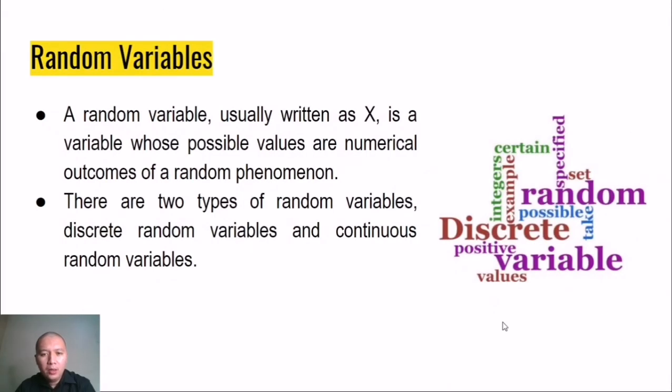When we talk of discrete and continuous variables, both of those are under the category random. When you say random, it is usually written as x, a variable whose possible values are numerical outcomes of a random phenomenon. When you say random, it means anything. There's no specific order or pattern. There are two types of random variables: discrete random variables and continuous random variables.